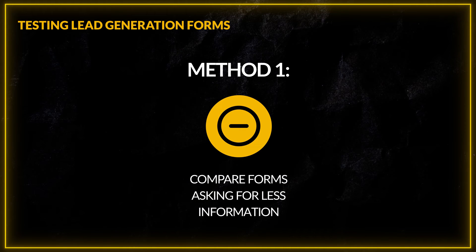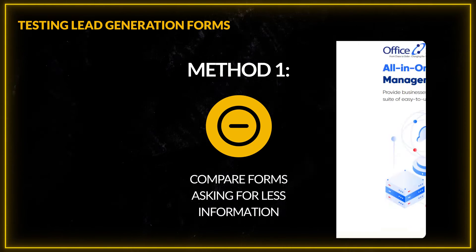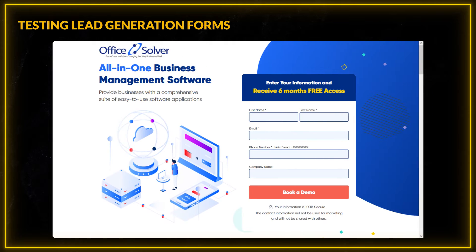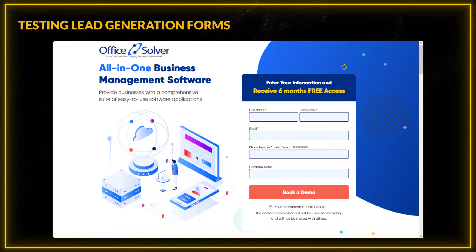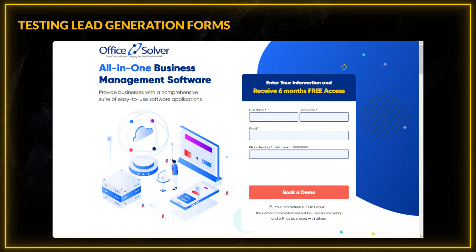Method number one is to compare forms where you ask for less information. For example, if you have a landing page where you capture name, email, phone number, and some kind of message, try a variation where you don't capture the company details or company information and compare the results. Technically, you can gather a company name from an email's domain address.